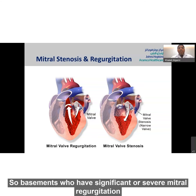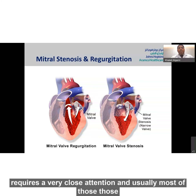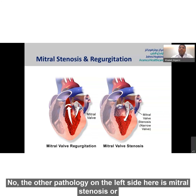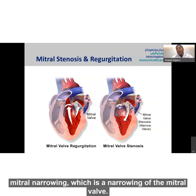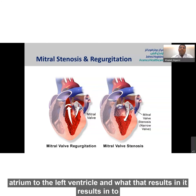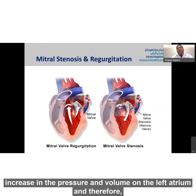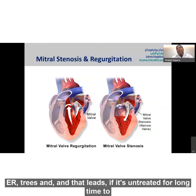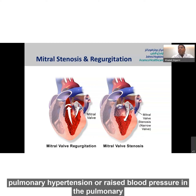If not treated for an extended period of time, mitral regurgitation can lead to weakness of the ventricular muscle and result in heart failure. Patients with significant or severe mitral regurgitation require close attention and usually surgery to correct it. The other pathology is mitral stenosis — a narrowing of the mitral valve that doesn't allow blood to flow easily from the left atrium to the left ventricle, resulting in increased pressure in the left atrium and the pulmonary arteries.